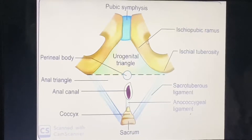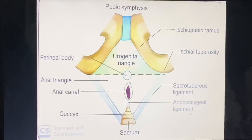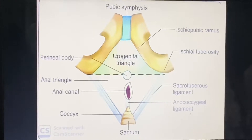The diagram shows the pubic symphysis, ischiopubic rami, and ischial tuberosities. The plane crossing at the lower end of the ischial tuberosities divides this diamond-shaped structure into two triangles.